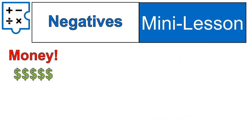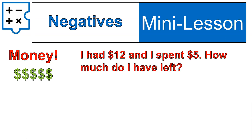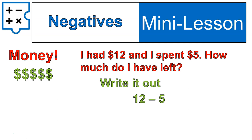Let's move on to negatives, and we're going to use money as an example. If I have $12 and I spend $5, how much do I have left? In these examples, we're going to have numbers that have different signs. Because I have positive 12 and I spend 5, which means 12 minus 5, which gives me 7. We know this when working with positive numbers — 12 take away 5 gives me 7.